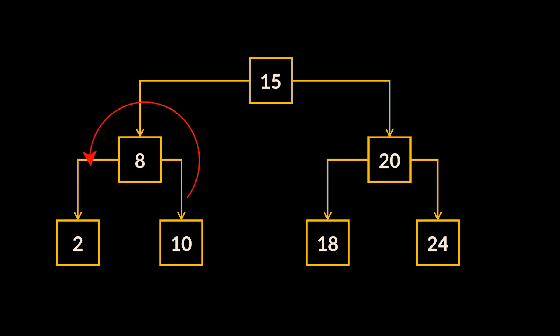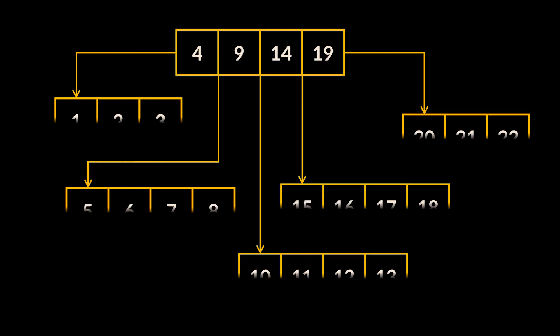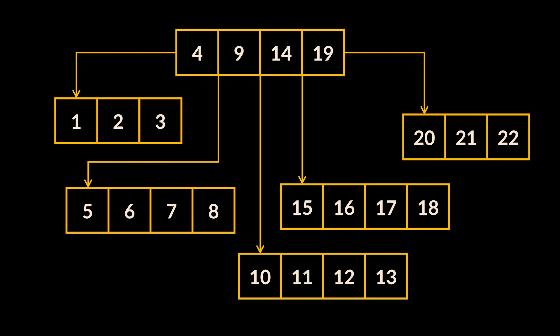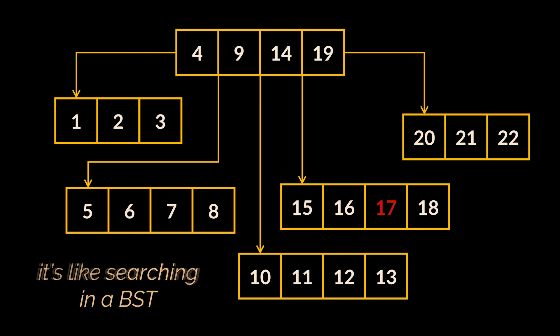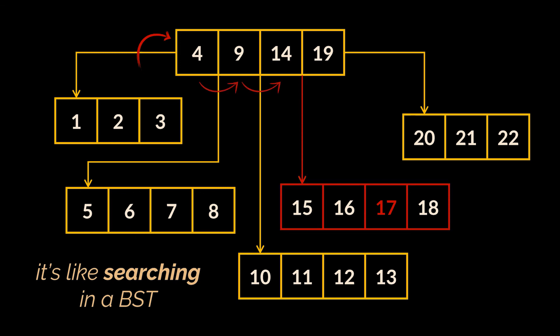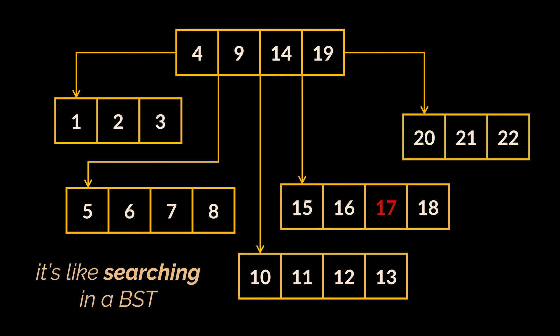Now let's look at searching for an item inside a B-tree. We'll use a B-tree of order 5. Searching a B-tree is similar to searching a binary search tree — start at the root node, then traverse the tree recursively from top to bottom. Say we want to retrieve the element with key 17. We start at the beginning of the root node at element 4 and traverse left to right until we find the element or the child node storing elements within that range. In our example, that child node is the one between elements 14 and 19. The same process repeats on the child node until we find the element or deduce it doesn't exist.